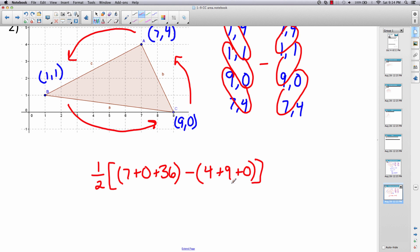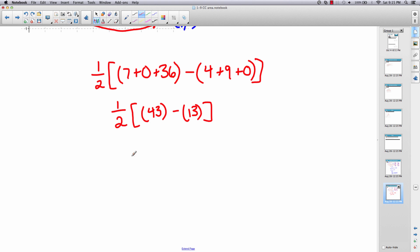So let's simplify this: half of 43 minus 13, and that's going to be half of 30.